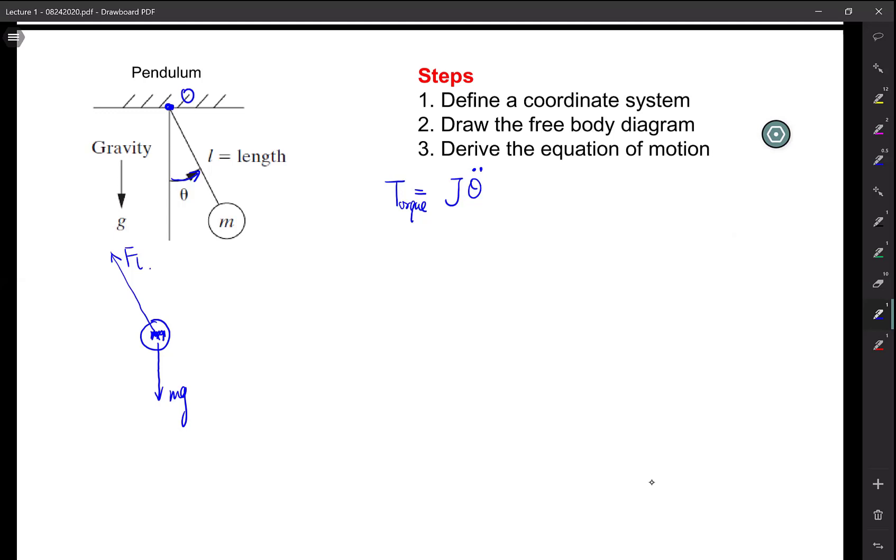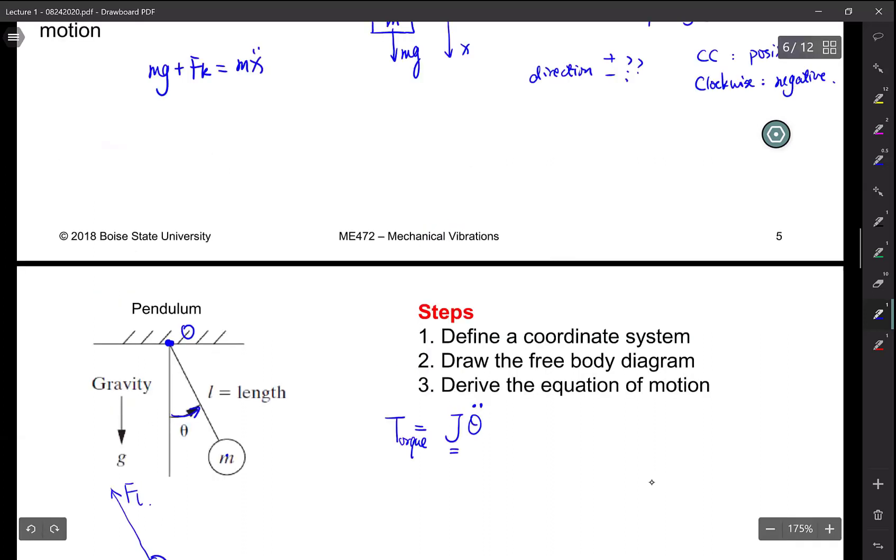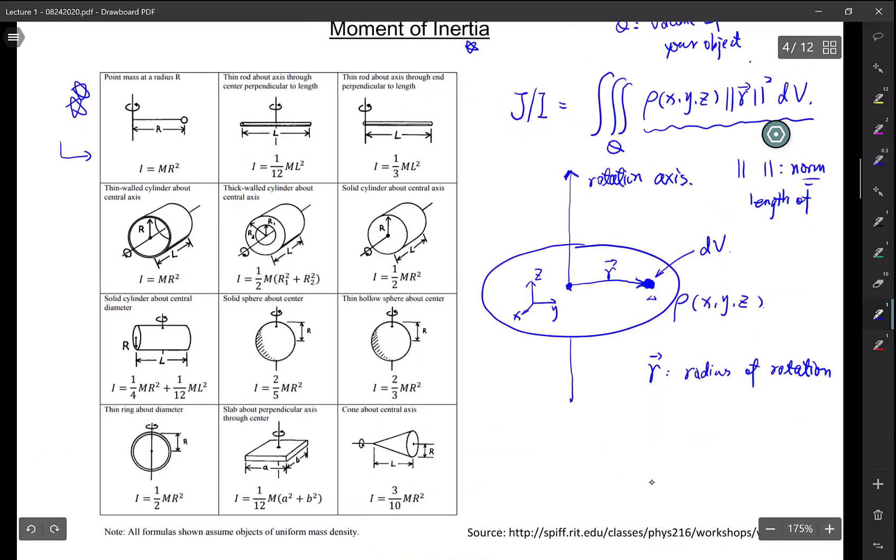We need to find out when there is a point mass dangling around a point O, what that J is. So you can go back to the table, that's the simplest case we have here.